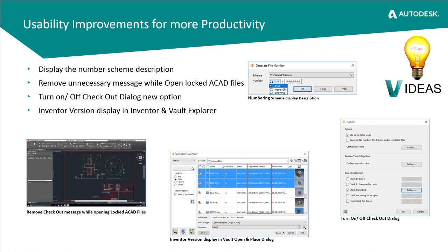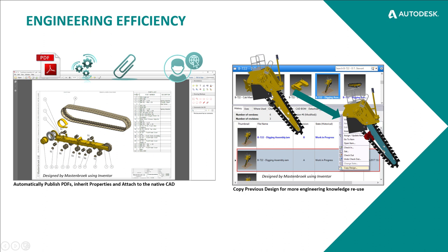Moving over to engineering efficiency. This particular feature — PDF creation — was the number one requested idea on our idea station. We've now implemented it inside of Vault so that on a change of state from any state to a release state, a PDF can now be generated of your drawings. This could be your Inventor IDW or a DWG file. This gives you the ability to have downstream consumers of the PDF — outside consumers of a PDF file — because most people use PDFs more than DWGs depending on the workflow and who the consumers are. We have done some copy design enhancements as well.